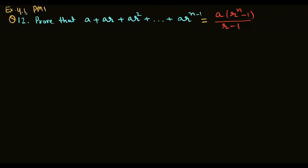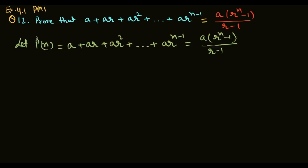Exercise 4.1, PMI Question number 12. Prove that a + ar + ar² + ... + arⁿ⁻¹ = a(rⁿ - 1)/(r - 1). Let the given statement be Pn.